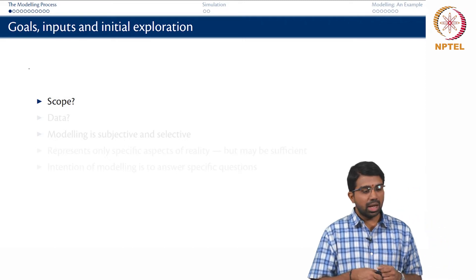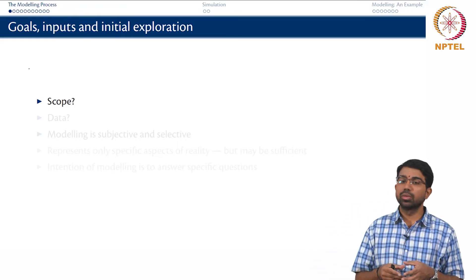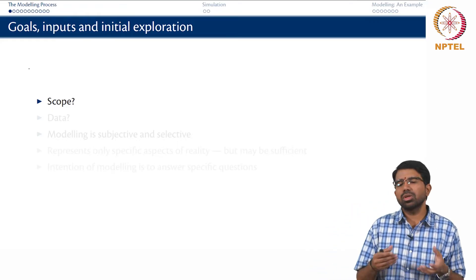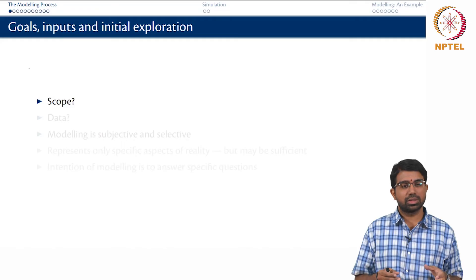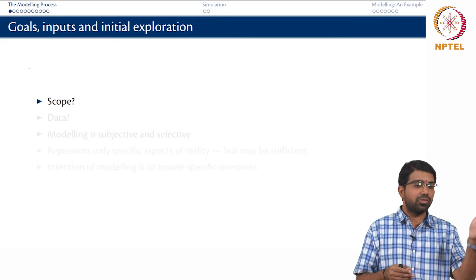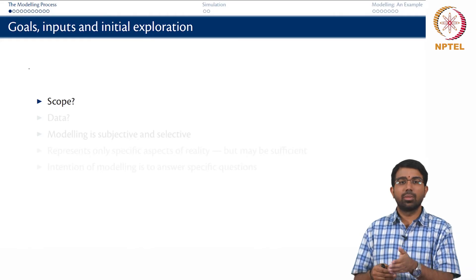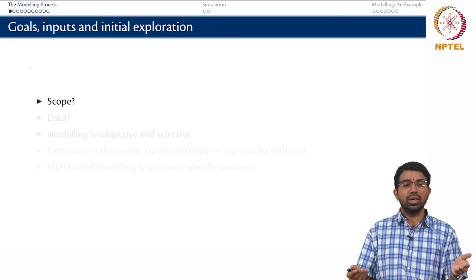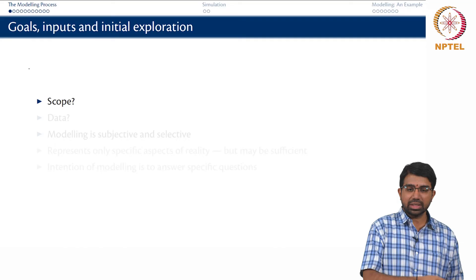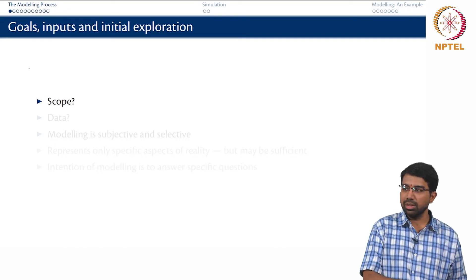To construct any model you will also require some data about the system. Given some data and knowledge about the system, you will start building a model. What kind of data are available? Let us look at the Michaelis-Menten model as an example.